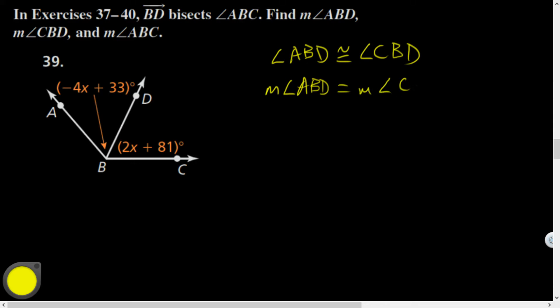Measurements refer to numbers - numbers are equal. Because those are equal, I could then, using substitution, plug in their corresponding things. That means 4x plus 33 equals 2x plus 81.